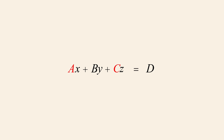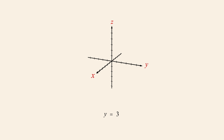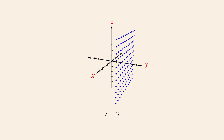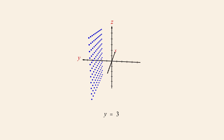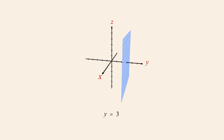If we set a and c to zero and b to one, all variables but y are eliminated from the equation. And setting d to three, we get the equation y equals three. Now since x and z are free to take on any value, the graph of this equation consists of every point whose y-coordinate is three. The graph of this equation is therefore a vertical plane three units to the right of the origin.